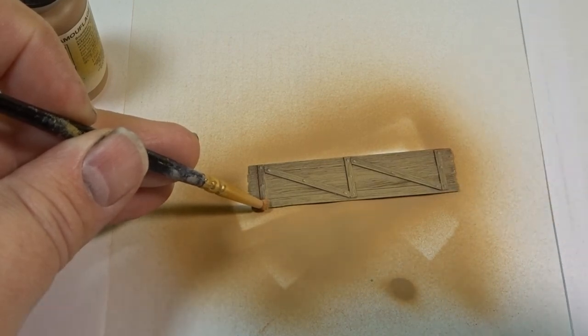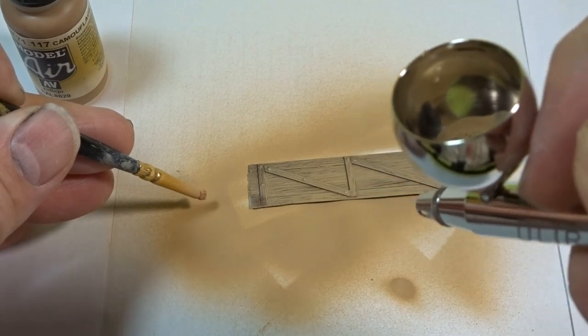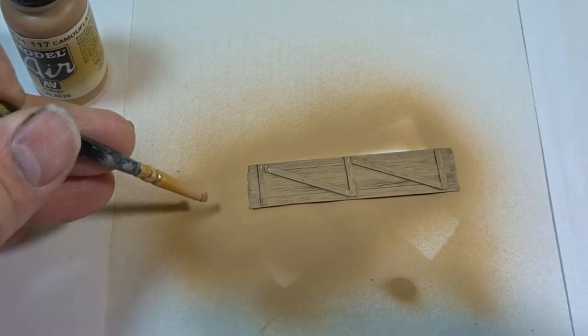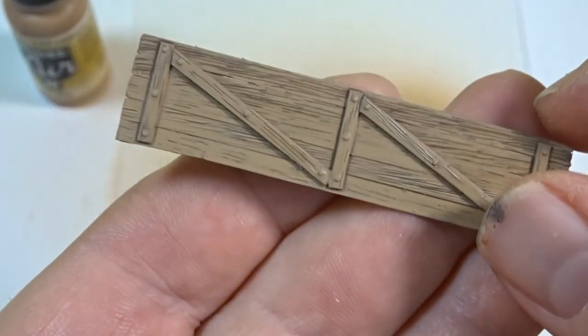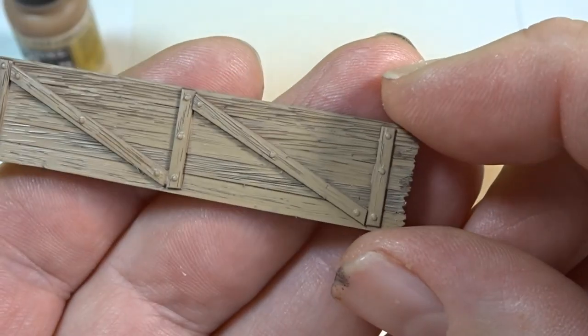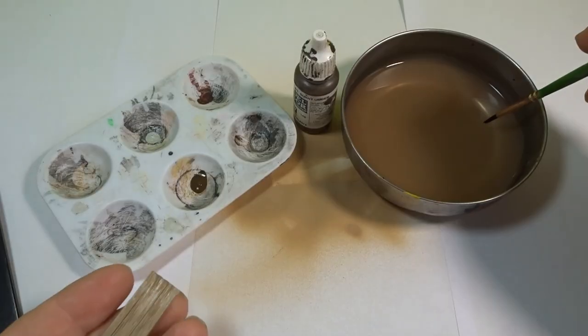Now I'm going to show you different ways of painting and colors, but again this is your fence panel. Whatever colors you want to use, you go with. So there we are, that's all nice and dry. And as you can see the texturing of the wood's come out well when we did it with the craft knife.